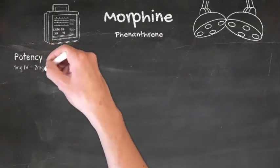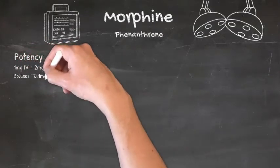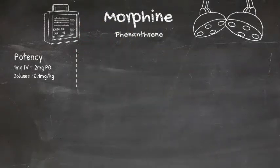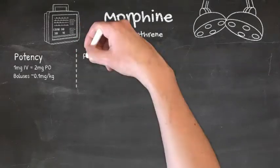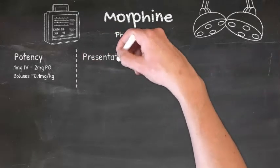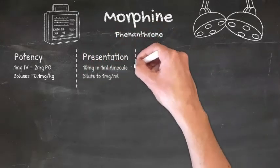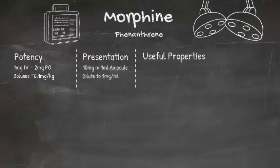It can be given by various different routes of administration, and its oral dose is equivalent to approximately half its IV dose. Intraoperatively, it's usually given in boluses of around 0.1 mg per kg, titrated to effect. It can be presented in various forms, but you'll generally find it comes in a 1 ml ampoule containing 10 mg of morphine, so you'll need to dilute it with saline in a 10 ml syringe to a concentration of 1 mg per ml.